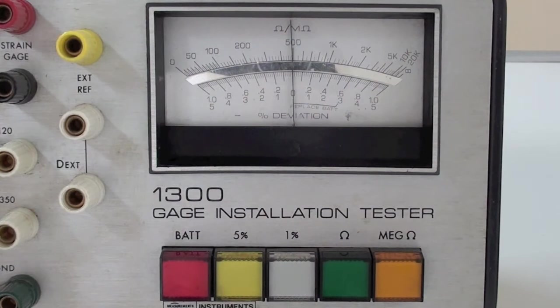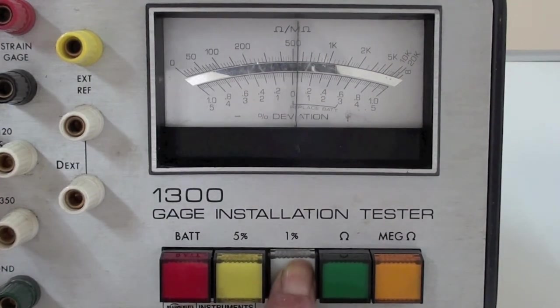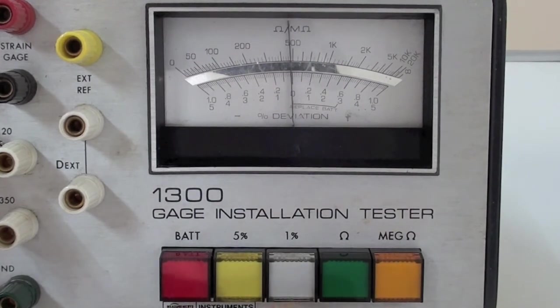For example, for a Micro-Measurements type CEA gauge, the resistance tolerance is 0.3%. In this test, the 1% range is selected and we see a deviation of less than 0.1%.